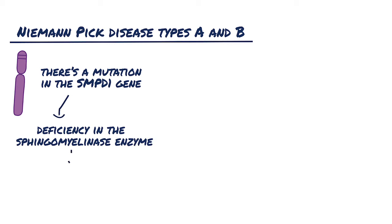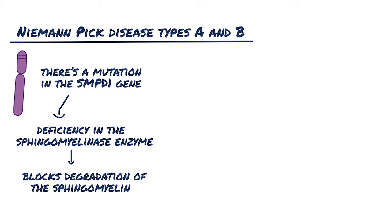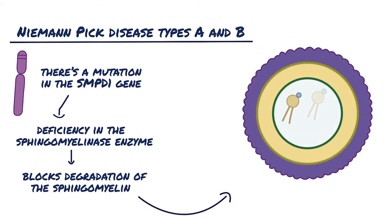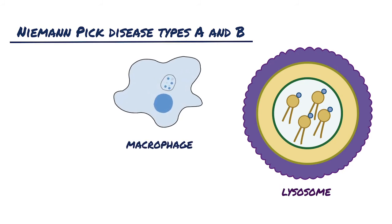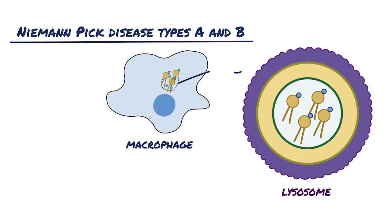The sphingomyelinase enzyme deficiency blocks degradation of sphingomyelin, resulting in its progressive accumulation within lysosomes, particularly within cells of the mononuclear phagocyte system. Affected cells become enlarged due to the distension of lysosomes filled with sphingomyelin.